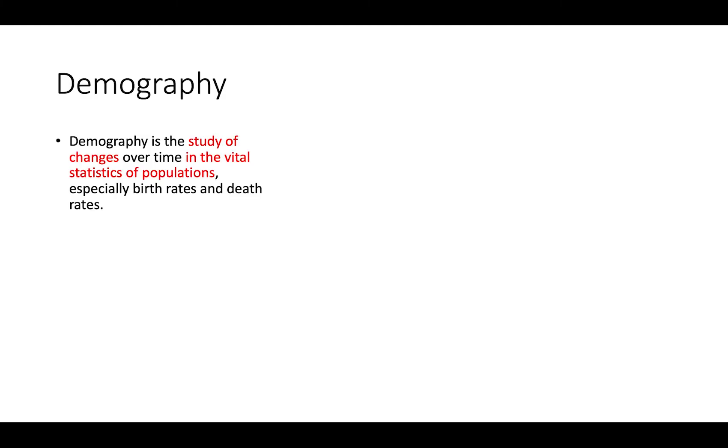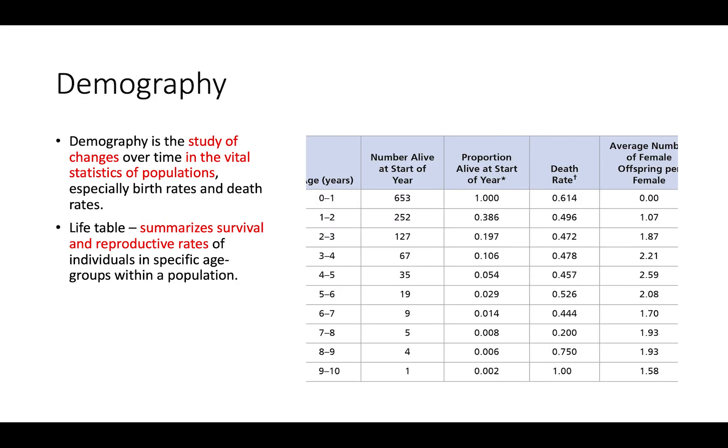Demography is the study of changes over time in the vital statistics of populations, especially the birth rates and the death rates. One way we can display and summarize that information is through the use of a life table. A life table summarizes the survival and reproductive rates of individuals in specific age groups within a population.